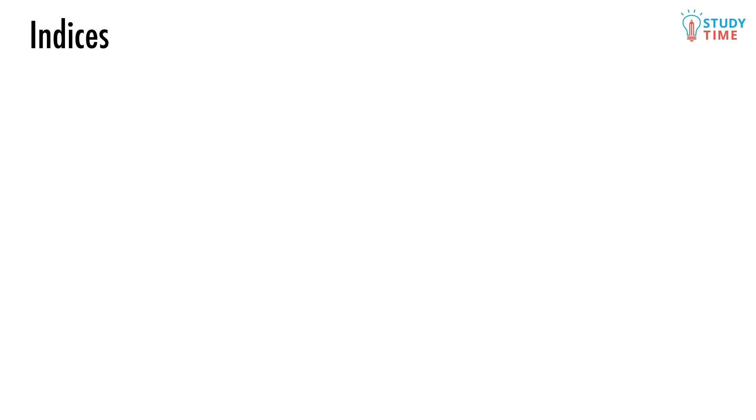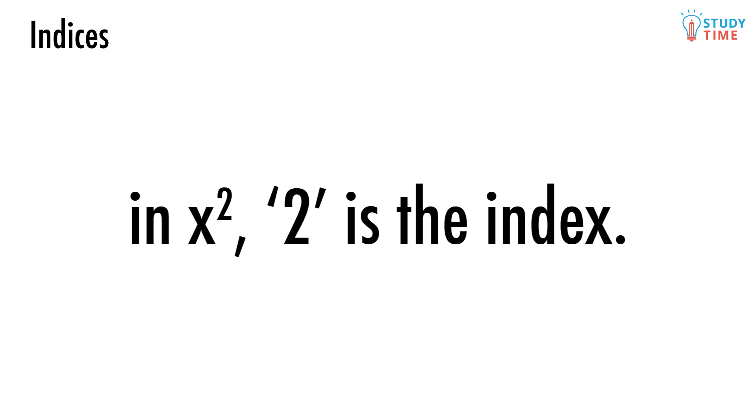An index is a power, so in an expression like x squared, the index is 2. There are three different rules that go along with indices, and unsurprisingly, they have the thrilling name of the index laws. Let's look at how the index laws work.